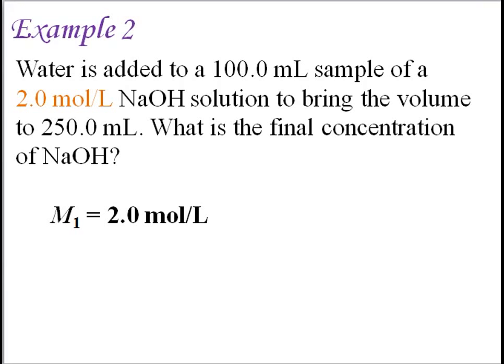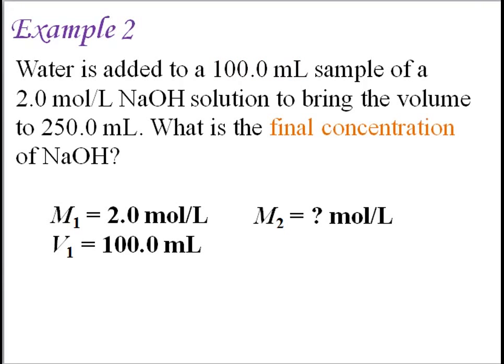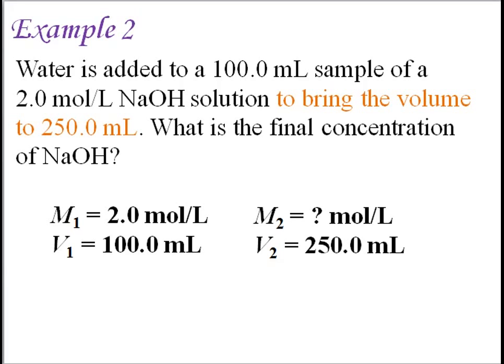The concentration of the original undiluted sample, M1, is 2 moles per liter. The volume of the original sample, V1, is 100 milliliters. The final concentration of the diluted solution, M2, is the unknown in this case. It is stated that water is added to bring the volume to 250 milliliters, so the final total volume of the diluted solution, V2, is 250 milliliters.